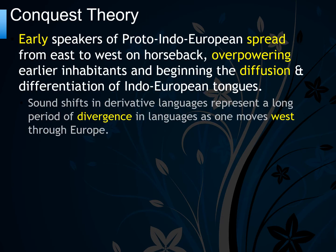The conquest theory says early speakers of the Indo-European language family spread from east to west on horseback, overpowering early inhabitants and beginning the diffusion and differentiation of Indo-European languages. Sound shifts in the language represent a long period of divergence as one moves west through Europe and east through South Asia.